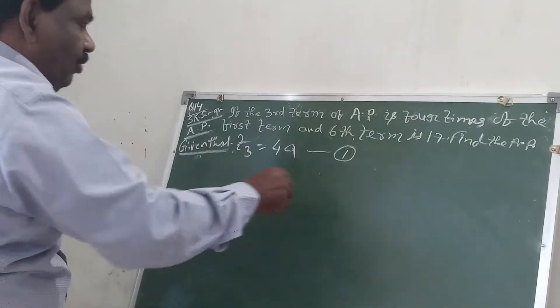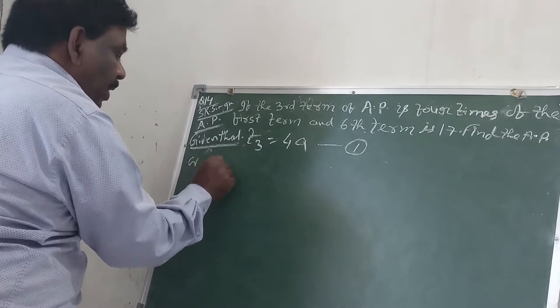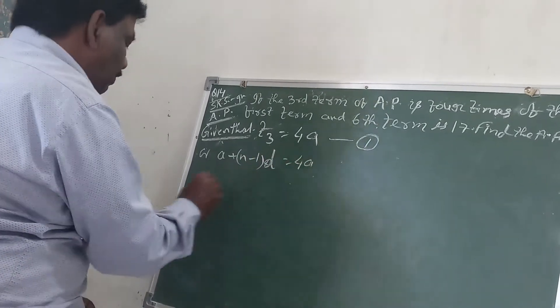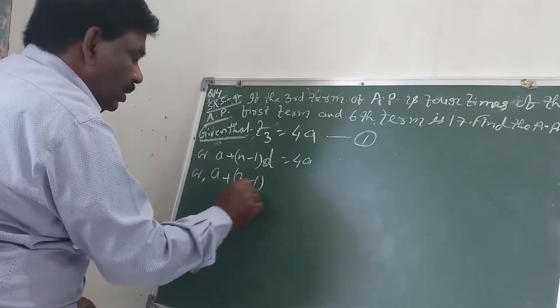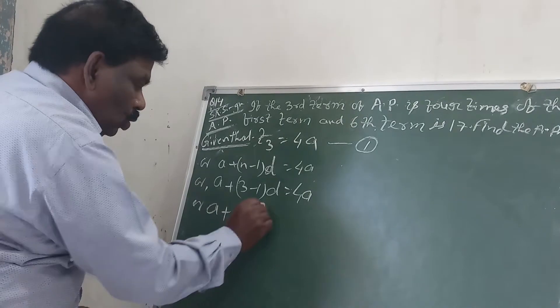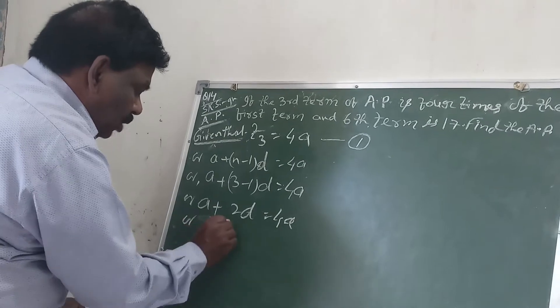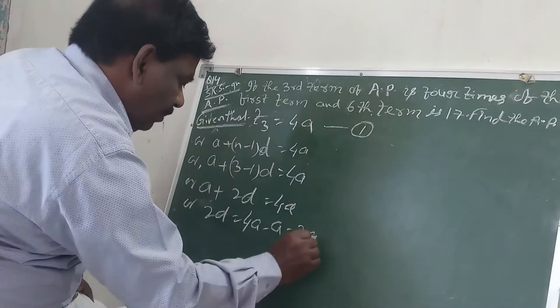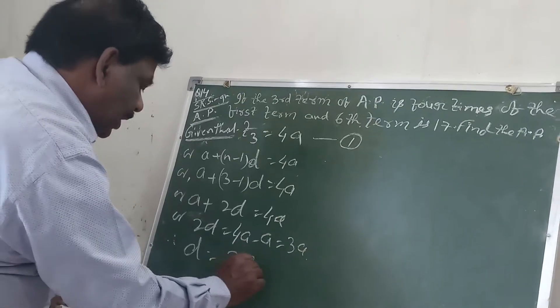This is my first equation. T3 equals A plus (N minus 1) into D. We know that formula: 4A equals A plus (3 minus 1) into D equals 4A. So A plus 2D equals 4A, or 2D equals 4A minus A equals 3A. Therefore D equals 3A by 2.